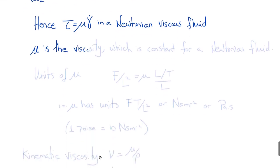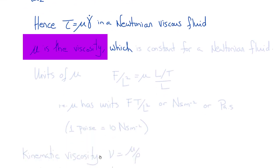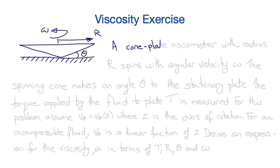So mu is called the viscosity, and for a Newtonian viscous fluid, the viscosity is constant.